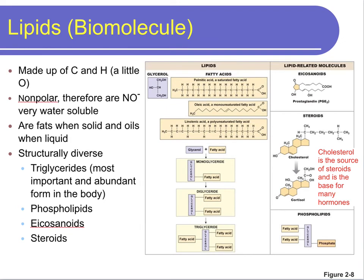The next biomolecule is lipids. Lipids are also made up of CHO but only a little bit of oxygen. They are non-polar, so they are hydrophobic and not water soluble. In their liquid form they are oils; in their solid form they are fats. Structurally, lipids are diverse. The most common and important lipid in the body is the triglyceride — tri for three — made up of a glycerol backbone and three fatty acid chains. We also have steroids like cholesterol, which have ring structures, and phospholipids, which make up your phospholipid bilayer. Cholesterol is not all bad — it is the source of our steroid hormones.